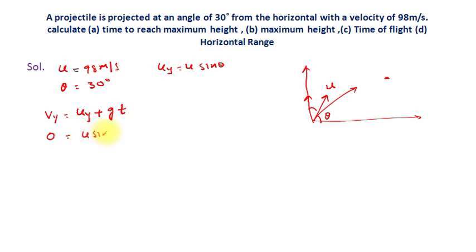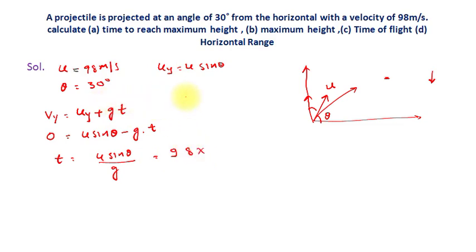So we write 0 = U·sinθ − G·T. Why minus? Because acceleration due to gravity is always downward, and by convention downward is negative. So at the point of maximum height, T = U·sinθ / G. Substituting U = 98 m/s, sin30° = 1/2, and G = 9.8 m/s²: T = (98 × 1/2) / 9.8 = 5 seconds.